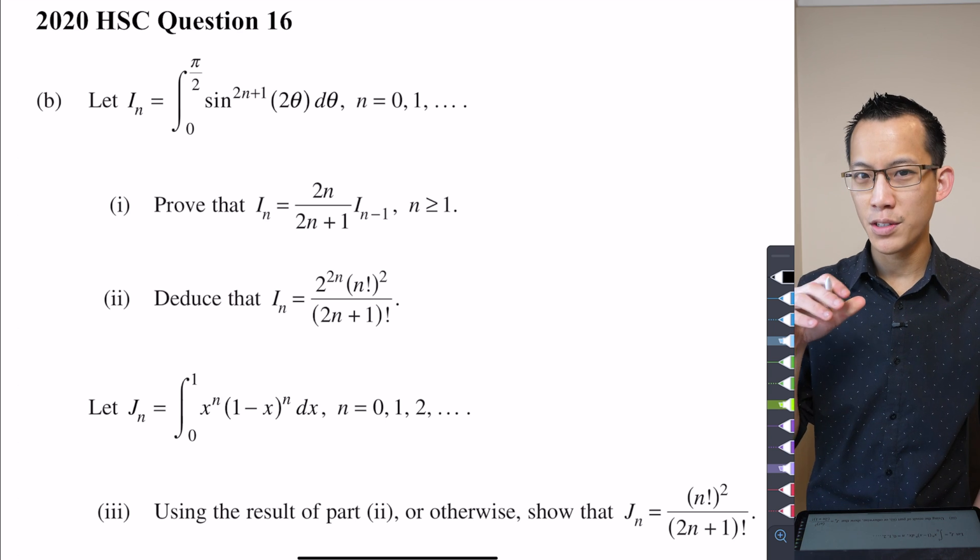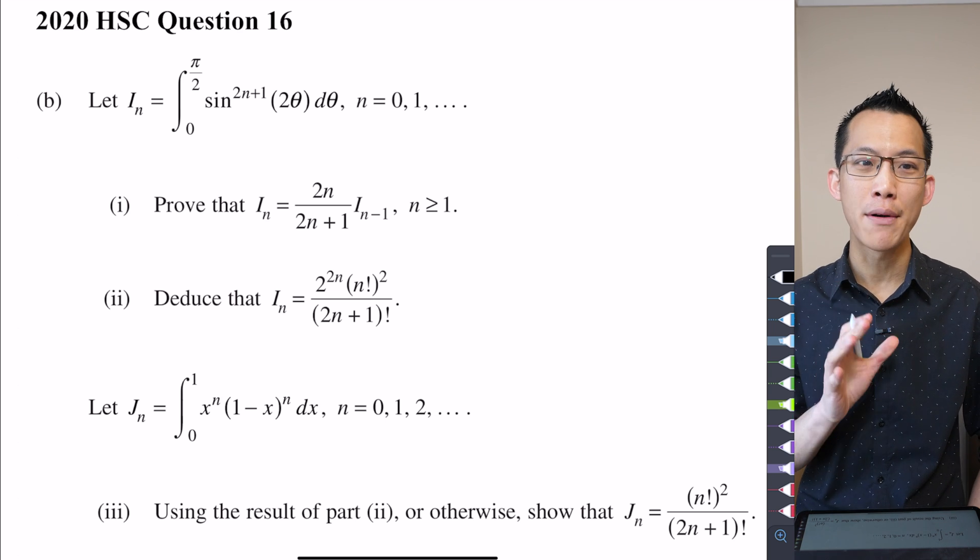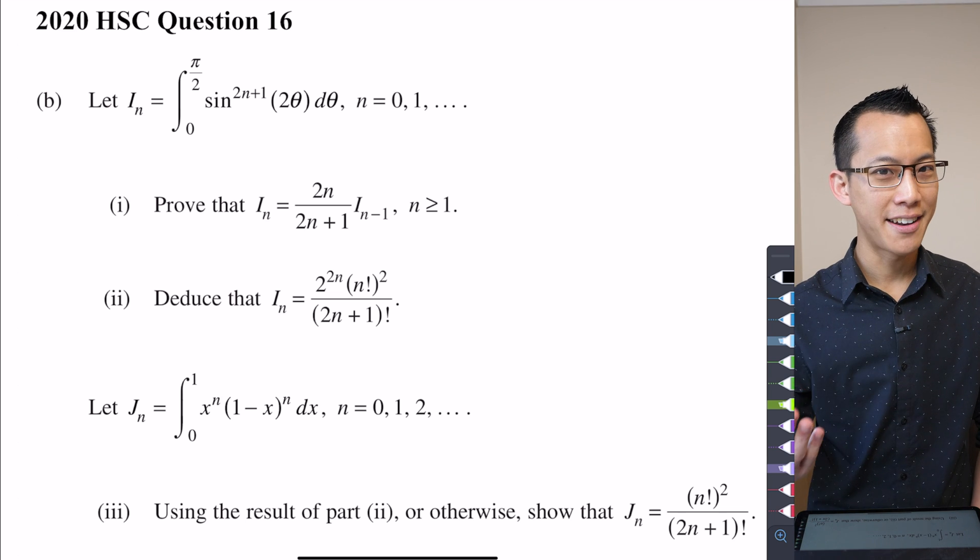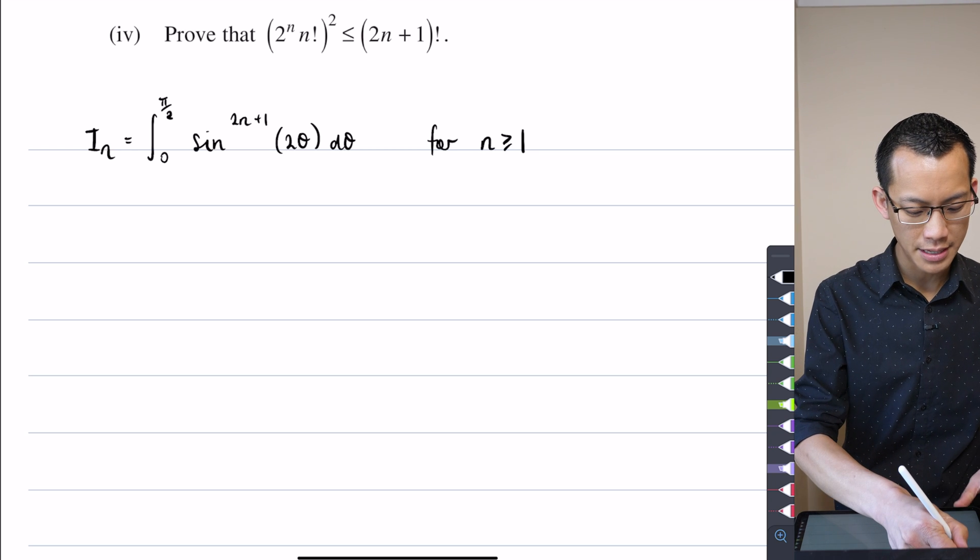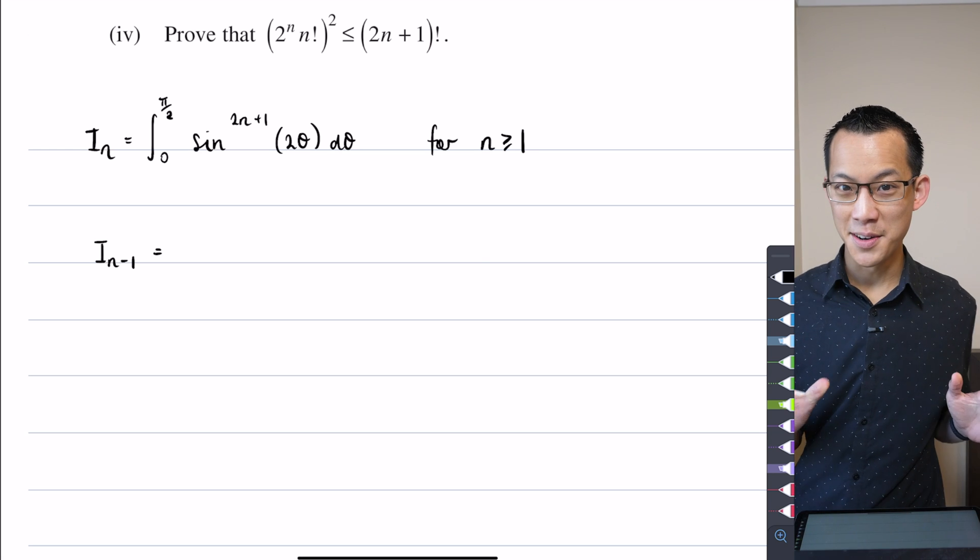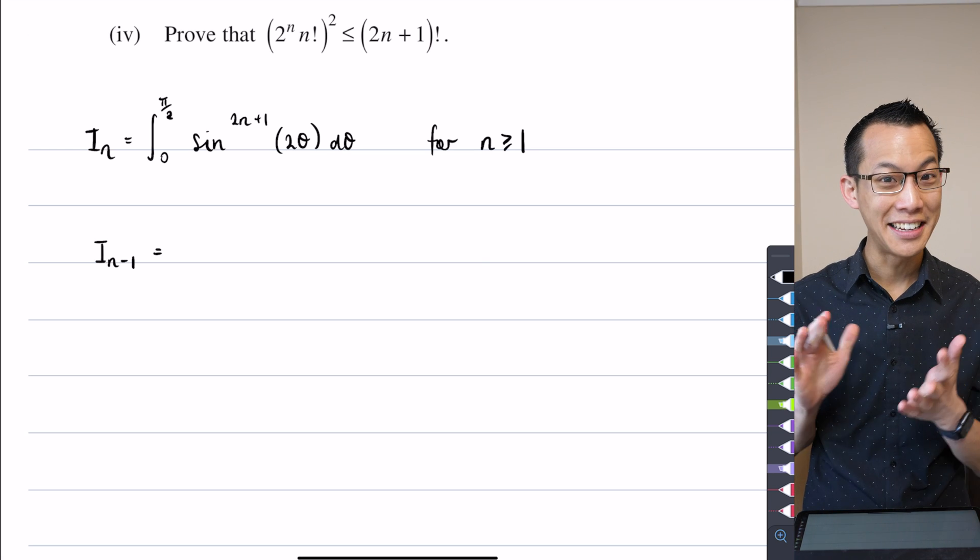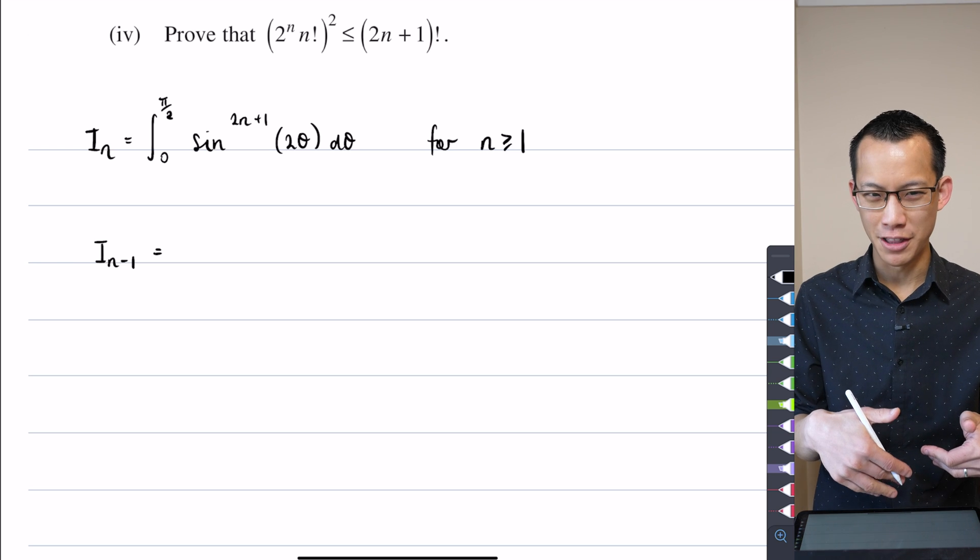But because there is an i_(n-1) there, what we need to think about is, well, what does i_(n-1) look like, and then how do we work toward it, how do we start to break apart the original integral to get on the road to where we want? So that's going to be the first part of my nudge for you. I'm going to say, well, what is i_(n-1)? I don't need to know much about how to go through this question, I can get some runs on the board, some marks that will count for something, even just by saying what this is.